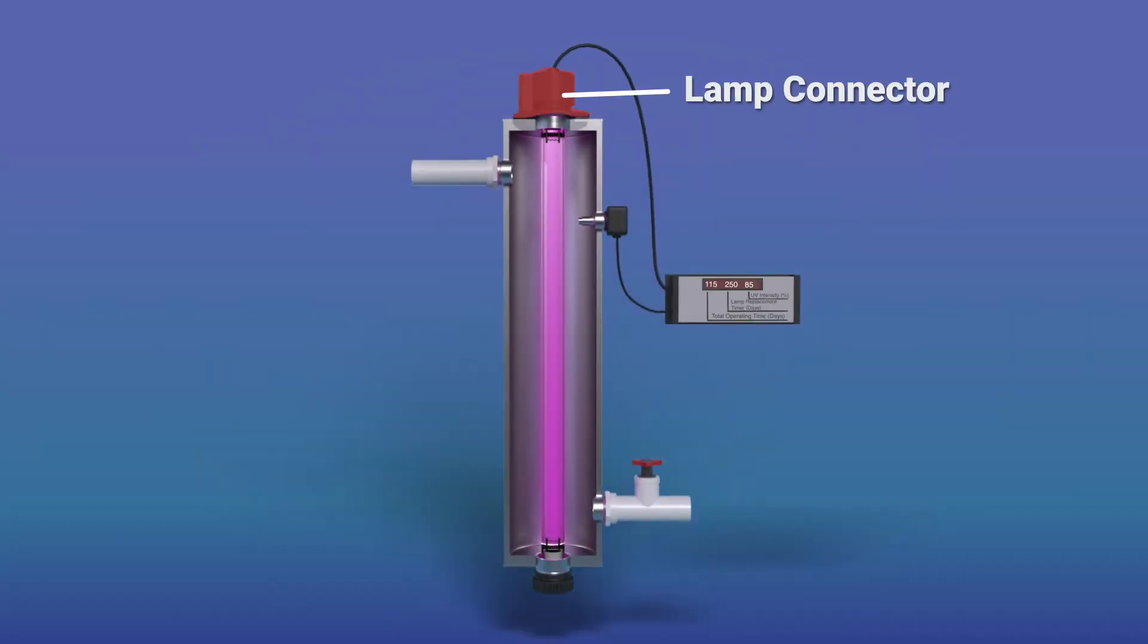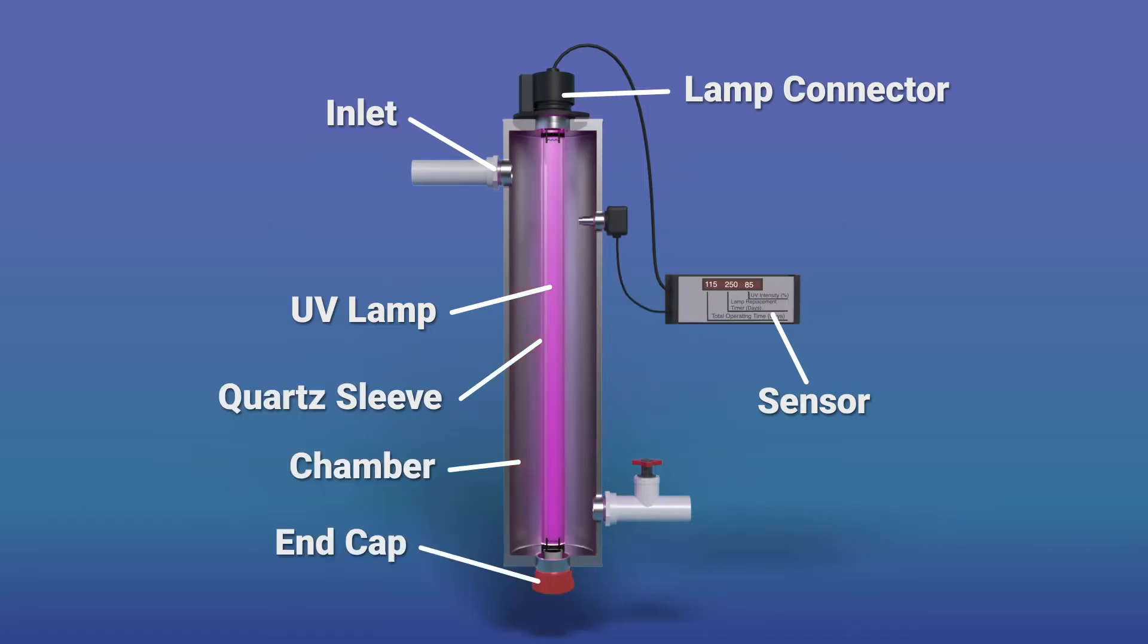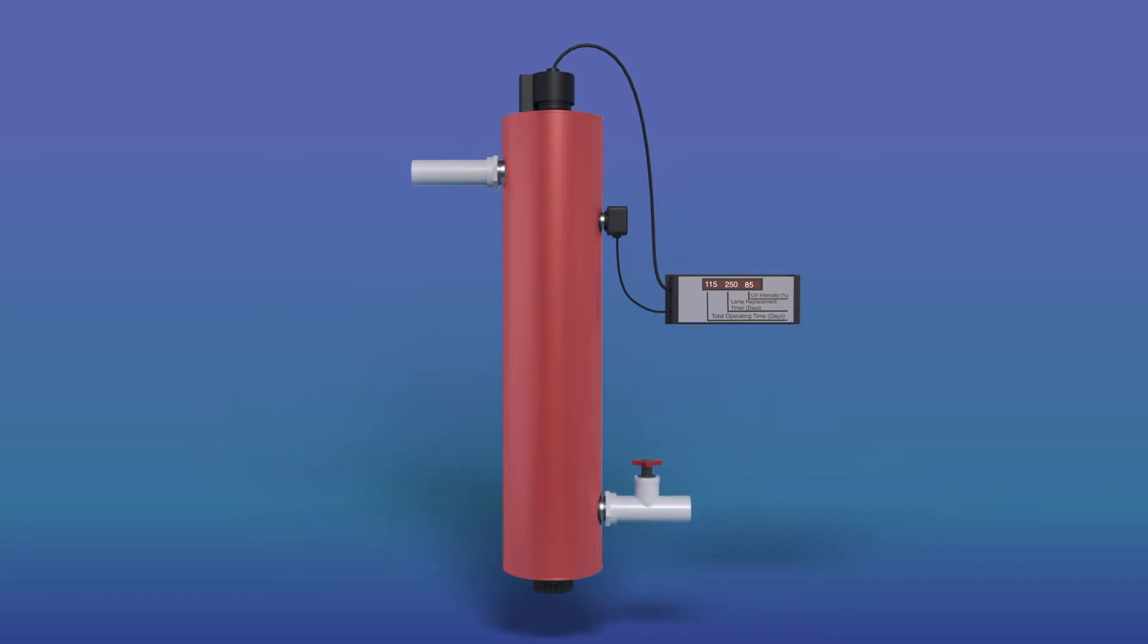A UV light water treatment system allows water to flow around a UV lamp, inactivating bacterial cells. Just like rays from the sun, this concentrated UV light can be dangerous, so the system includes a protective case. The UV radiation will not have a residual impact on the water.